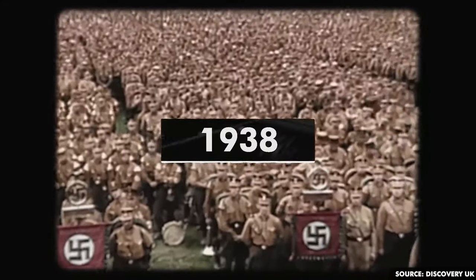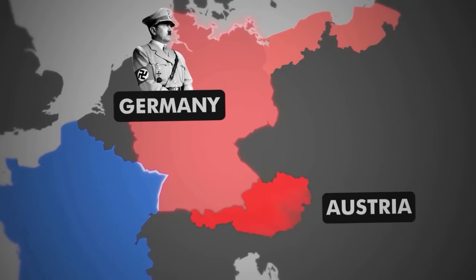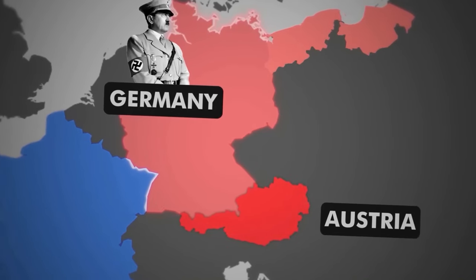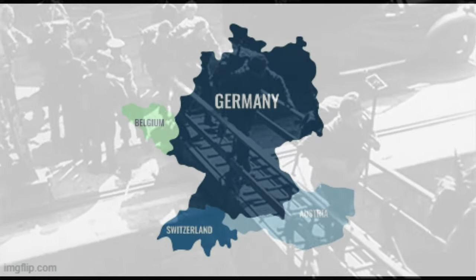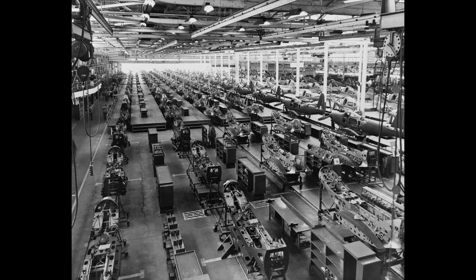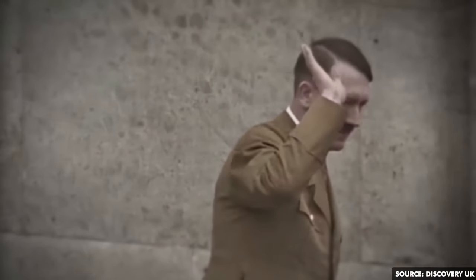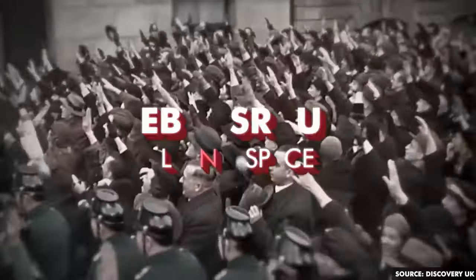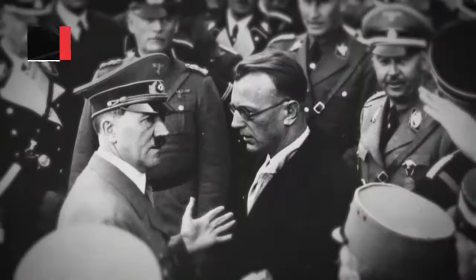In 1938, when Hitler believed that his military was sufficiently prepared, he focused his attention on their neighbor Austria. Austria was a must-have country for Hitler. He wanted all German-speaking countries to unite as one nation. His ultimate goal was not only to conquer as many countries as possible, but also to acquire their resources to advance his own country. The people Hitler believed to be racially superior, his Aryan race, he wanted to give them Lebensraum — living space, so that they could live freely.